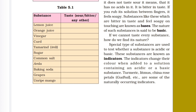If we cannot taste every substance, how do we find its nature? Special types of substances are used to test whether a substance is acidic or basic. These substances are known as indicators. Indicators change their color when added to a solution containing an acidic or basic substance. Turmeric, litmus, and china rose petals are some naturally occurring indicators.